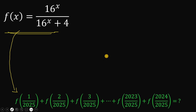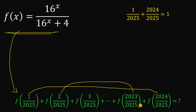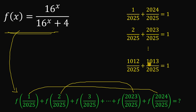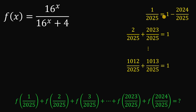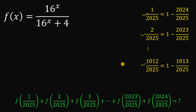The first thing to do in this kind of question is to observe the given. Notice if we add 1 over 2025 and 2024 over 2025 we get 1. Also if we add 2 over 2025 and 2023 over 2025 we also get 1, and so on until we reach the middle part: 1012 over 2025 plus 1013 over 2025. Take note that 1 over 2025 equals 1 minus 2024 over 2025, and similarly for the other pairs. This is important because we will use this concept to answer the question.